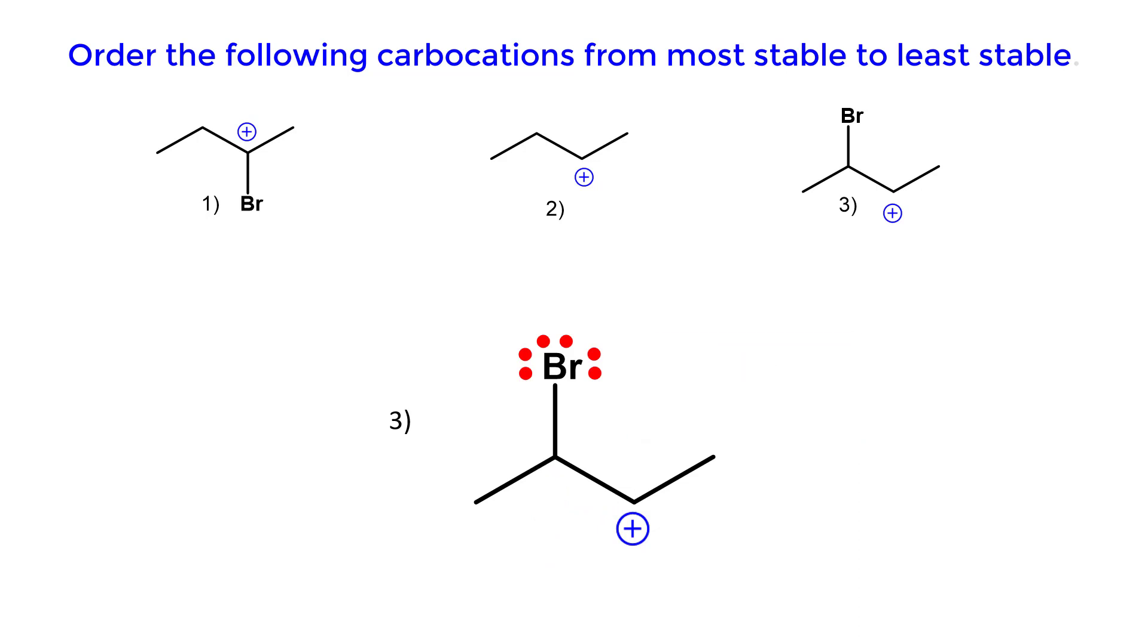What effect does the bromine atom have on the stability of the carbocation? We know that bromine is more electronegative than carbon. Put partial charges on the atoms. Notice that a partial positive charge is adjacent to the carbocation.